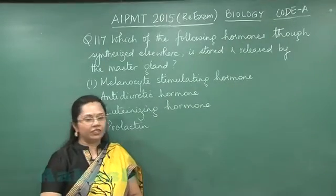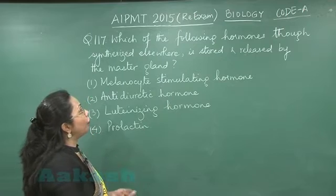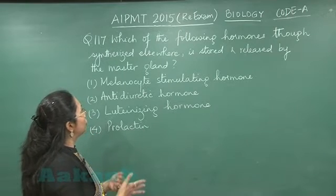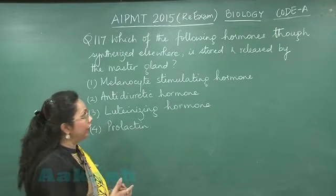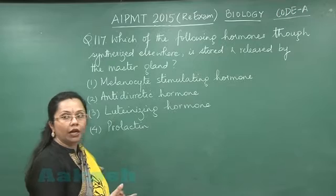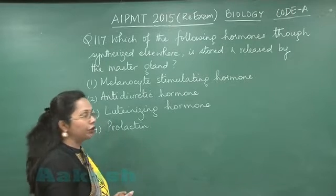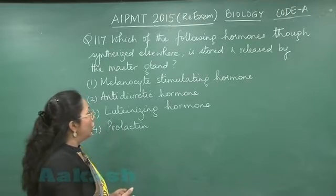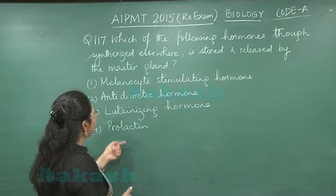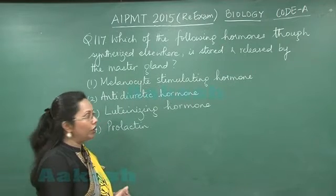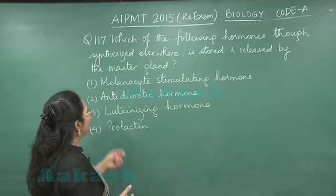Question number 117: which of the following hormones, those synthesized elsewhere, is released by the master gland? Now we know the master gland is the pituitary. These four hormones that we see here — all of them are released from the pituitary.